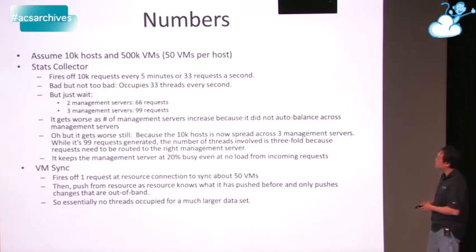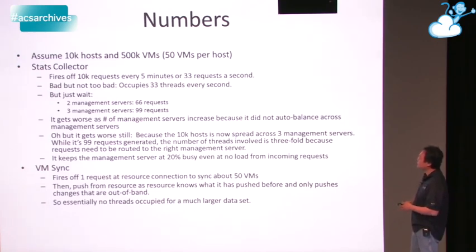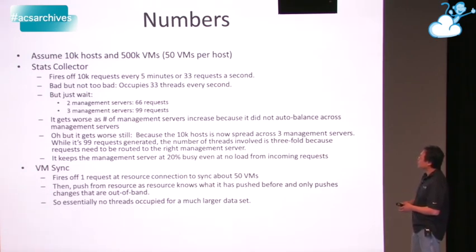Let's look at some numbers. Assume about 10k hosts and about 500k VMs — that's reasonable at 50 VMs per host. The Stats Collector fires off 10k requests every 5 minutes, which is about 33 requests per second. A big server can probably still handle that, but it occupies 33 threads every second waiting on aging connections. Because it does the exact same thing on each management server, as you scale management servers it gets worse — on two management servers it's 66 requests per second, three servers is 99. The number of requests it generates scales linearly with the number of management servers.